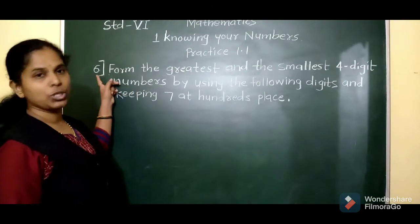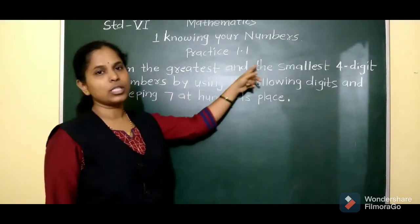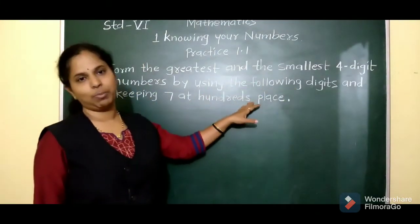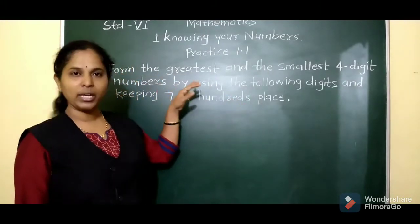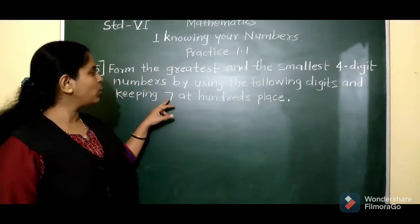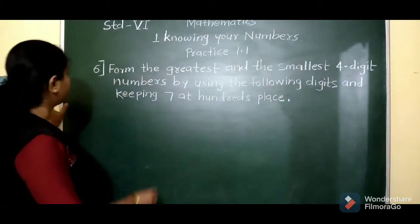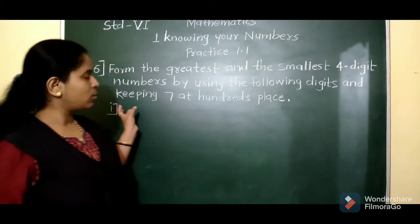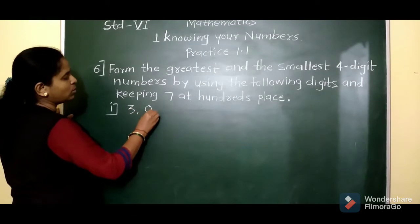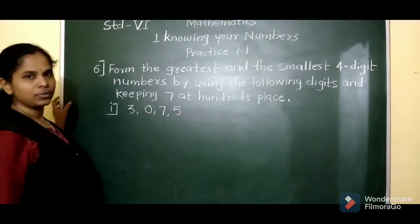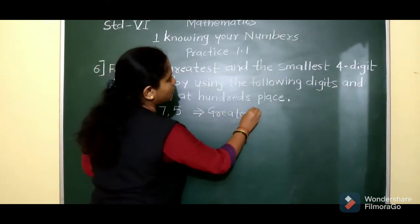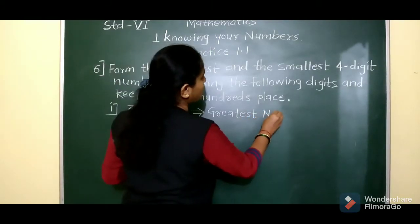Next is question number 6: form the greatest and the smallest 4-digit numbers by using the given digits and keeping 7 at the hundreds place. Again, we have to make the greatest and smallest 4-digit numbers, but here the condition is to keep 7 at the hundreds place. The digits given are 3, 0, 7, and 5.